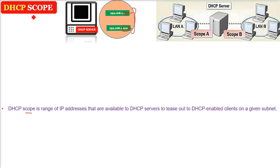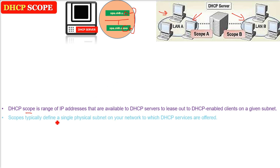So DHCP scope is the range from — say 1 to 100. This is the range of IP addresses available to the DHCP server that it can lease out, because the IP and network configuration is leased out, not permanently given. So it is leased out to DHCP-enabled clients on a given subnet.